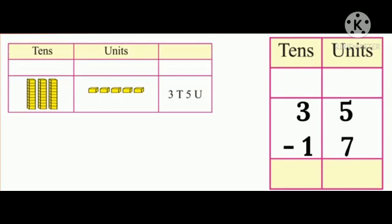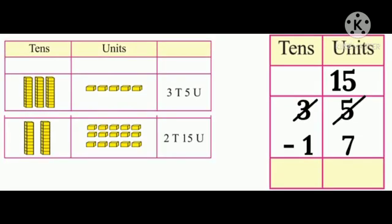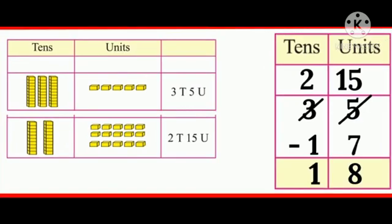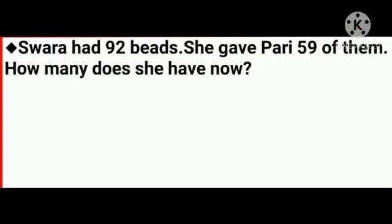Now the next example: 35 minus 17. Here we cannot subtract 7 units from 5 units. So we untie one ten from 3 tens. There will be 15 units and 2 tens will be left. Now 15 minus 7 equals 8, and 2 minus 1 equals 1. So the answer is 18.